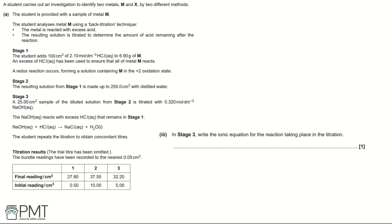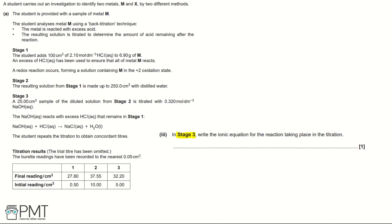Part 3: Write the ionic equation for the reaction in the titration. In Stage 3, sodium hydroxide (a base) reacts with hydrochloric acid in a neutralisation reaction, producing a salt and water. The ionic equation for any neutralisation reaction is: H⁺(aq) + OH⁻(aq) → H₂O(l). You must write this ionic equation completely to gain the mark.